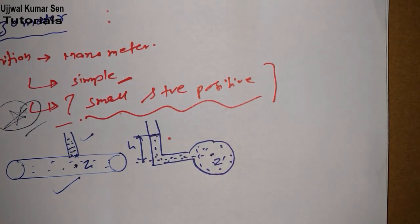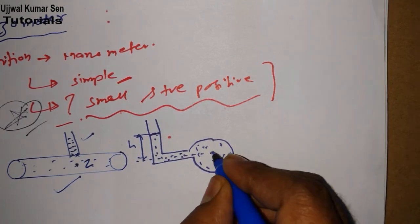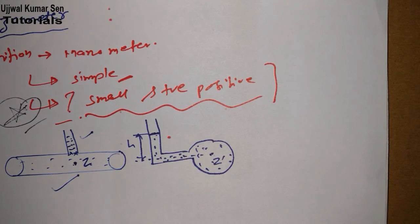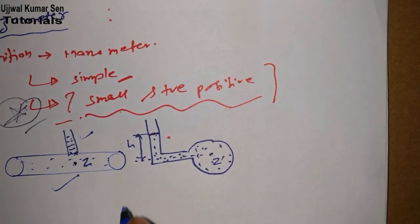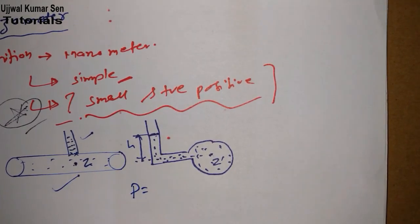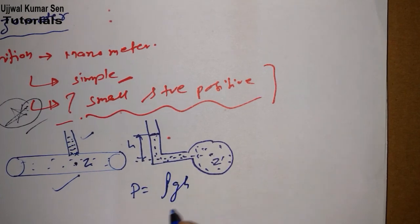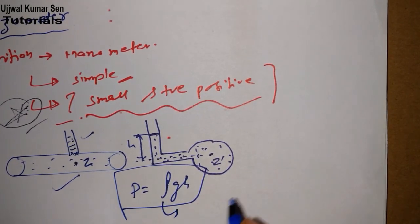We have to find out pressure and for that we are having a formula. What is that formula? I am just writing down for finding out pressure at this point. We are having a formula: p is equal to ρgh.